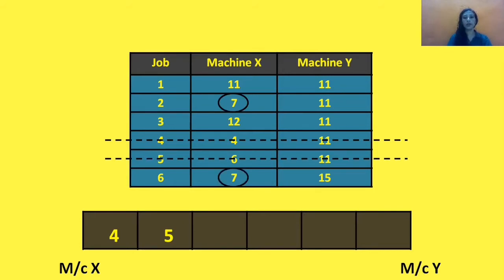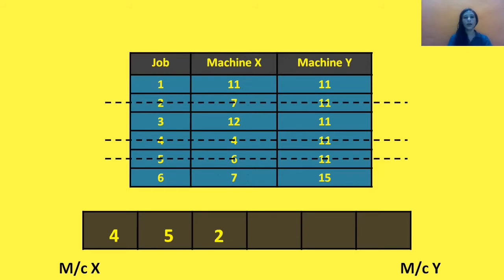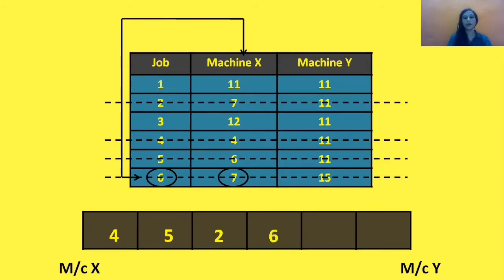The value 7 appears two times in the table. Since both 7s fall on the same machine, we need to check their processing time on the other machine. For the first 7, the processing time on machine Y is 11, and for the next 7, the processing time on machine Y is 15. Since 11 is less than 15, we give priority to the first 7, corresponding to job 2. So we allocate job 2 on machine X, writing 2 after 5 in the grid. Next minimum is 7 corresponding to job 6, so we allocate job 6 on machine X, writing 6 after 2 in the grid.